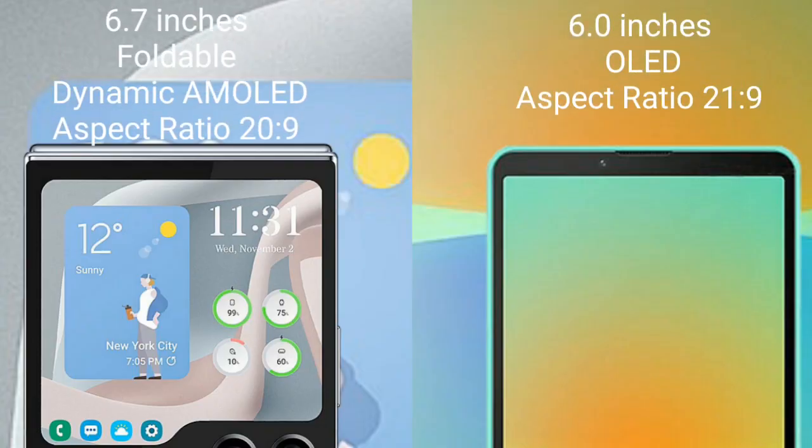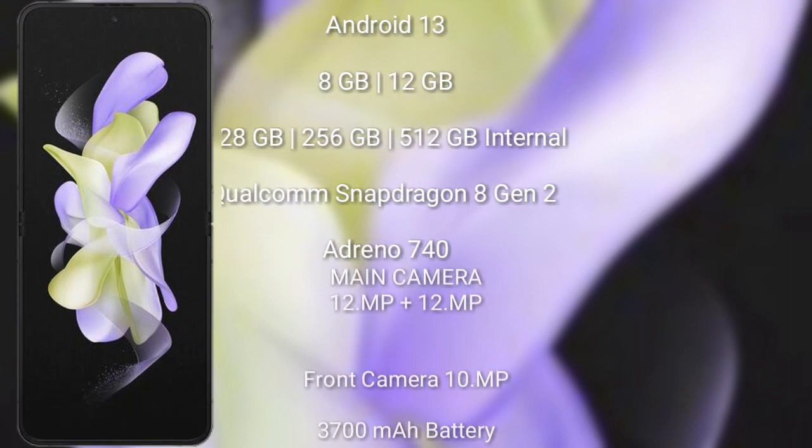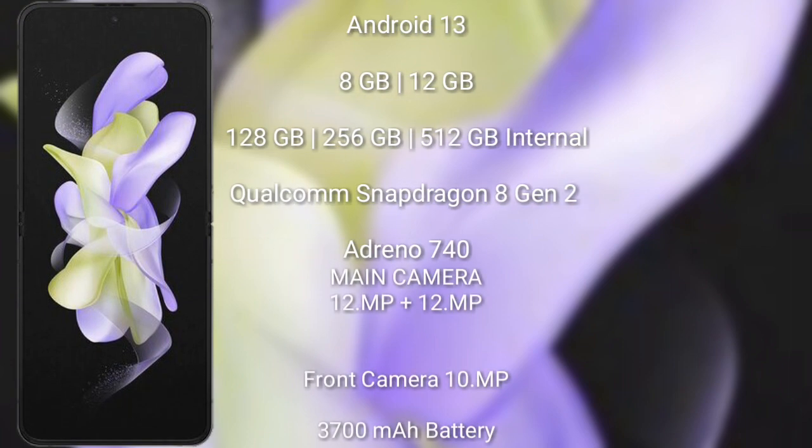Samsung Galaxy Z Flip 5 comes with a 6.7-inch foldable dynamic AMOLED display and aspect ratio 21:9. Sony Xperia 10 Mark 4 comes with a 6-inch OLED display and aspect ratio 20:9. Samsung Galaxy Z Flip 5 runs on the Android 13 operating system.